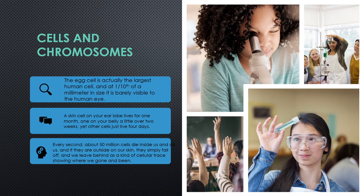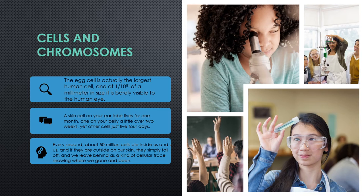A skin cell on your earlobe lives for one month, one on your belly a little over two weeks, yet other cells just live four days. And when you scrape your knee, you might lose several million cells in one fell swoop and a few drops of blood. They too will be immediately replaced by other blood cells which divide and divide and divide.